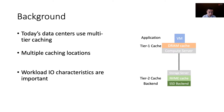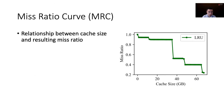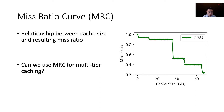It is well known that effective caching management requires a good understanding of IO workload characteristics. The Miss Ratio Curve is such a tool to study IO workload. It describes the relationship between a certain cache size and the resulting miss ratio. For two-tier caching, we can generate a miss ratio surface in three dimensions. For three-tier caching, we can generate a miss ratio function in four dimensions.